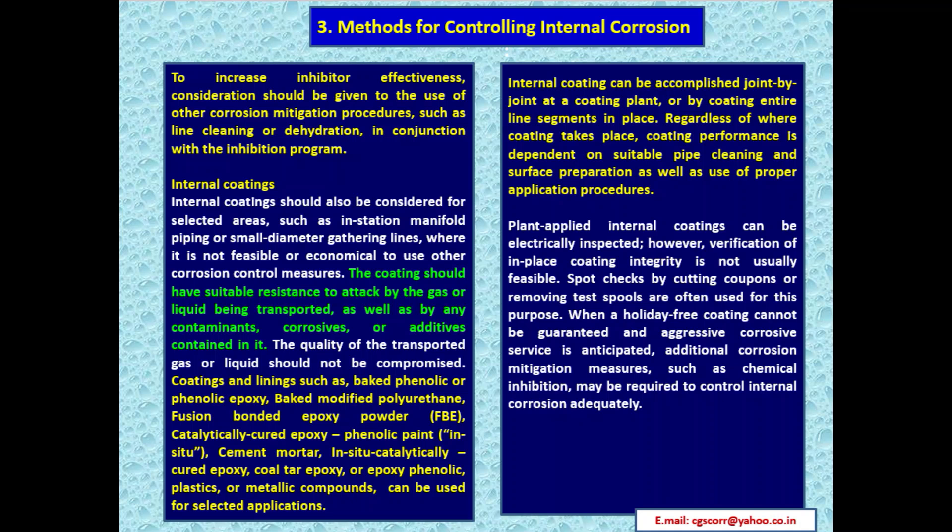Internal coating can be accomplished joint by joint at a coating plant or by coating entire line segments in place. Coating performance is dependent on suitable pipe cleaning, surface preparation, and proper application procedures. Plant-applied internal coatings can be electrically inspected; however, verification of in-place coating integrity is not usually feasible. Spot checks by cutting coupons or removing test spools are often used. When a holiday-free coating cannot be guaranteed or aggressive corrosive service is anticipated, additional corrosion mitigation measures such as chemical inhibition may be required.